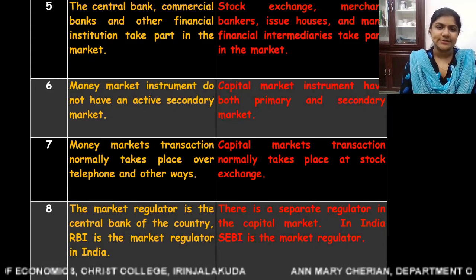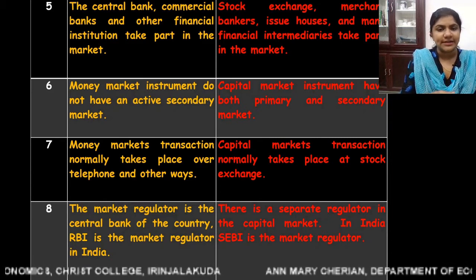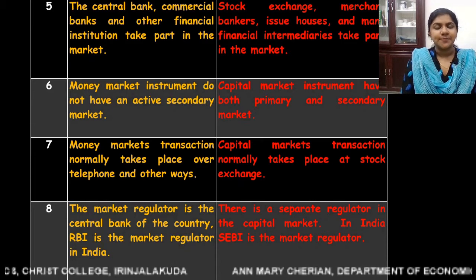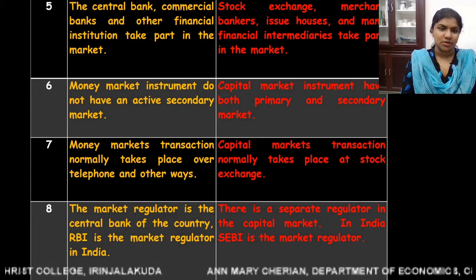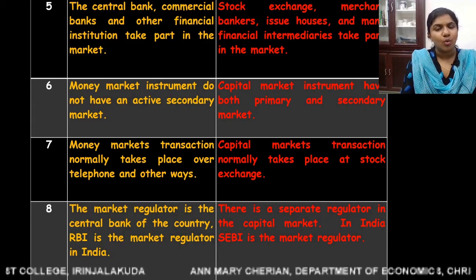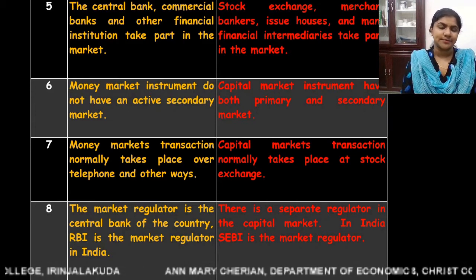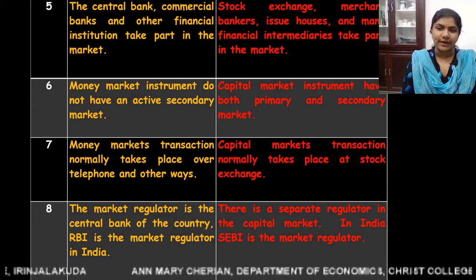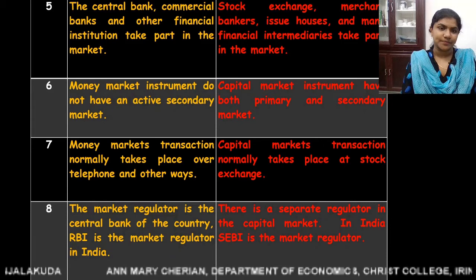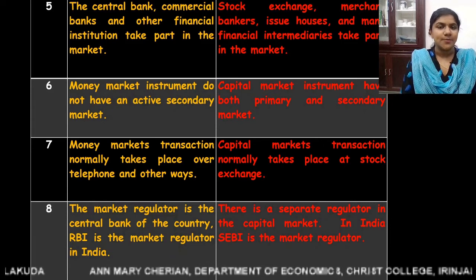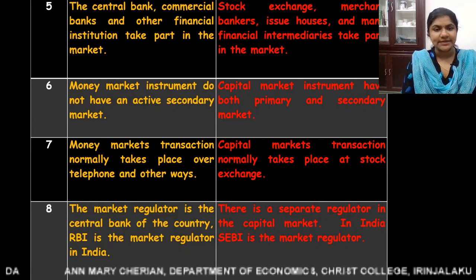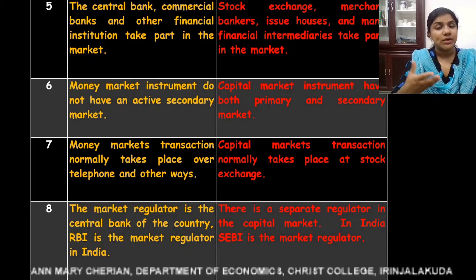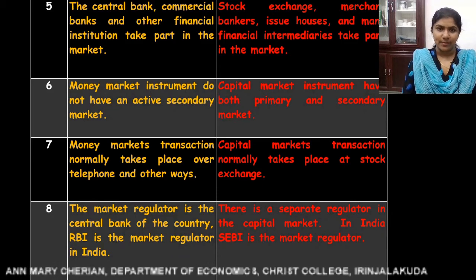Another difference is that money market instruments do not have an active secondary market, since money markets deal with short-term instruments. Whereas the capital market has both a primary market and an active secondary market.